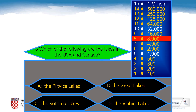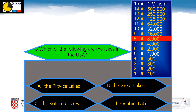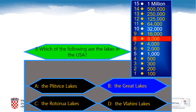Let's answer question number 8. Which of the following are the lakes in the USA and Canada? A: The Plitvice Lakes, B: The Great Lakes, C: The Rotorua Lakes, D: The Vlahini Lakes. Definitely the Great Lakes. The Plitvice Lakes are in Croatia, the Rotorua Lakes are in Australia, and the Vlahini Lakes are in Bulgaria.